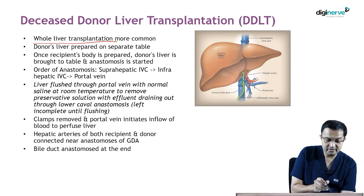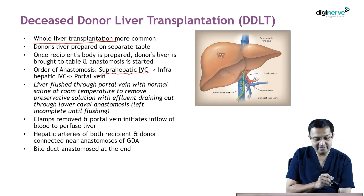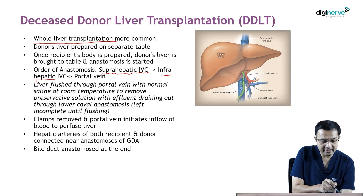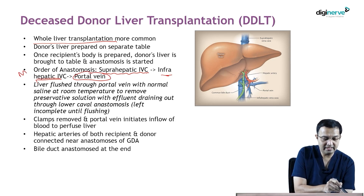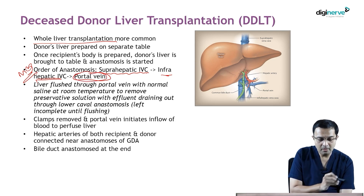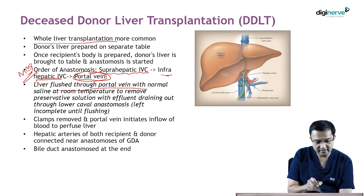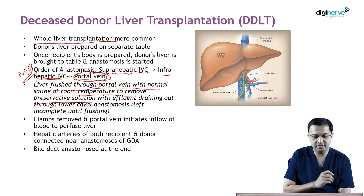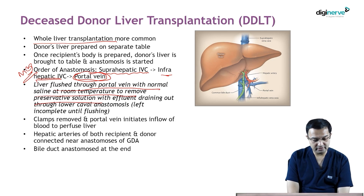The order of anastomosis is: first, suprahepatic IVC anastomosis; then infrahepatic IVC anastomosis; then portal vein anastomosis — and this has been asked as an MCQ in the past. Before completing the portal vein anastomosis, the liver is flushed through the portal vein with normal saline at room temperature to remove preservative solution, with effluent draining out through the lower caval anastomosis.